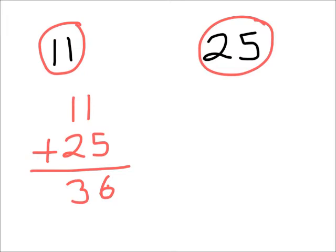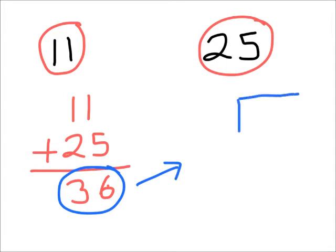Now to find the middle value — to find the number that's exactly halfway — I'm going to take the sum of the two numbers, the total when they're added together, and I'm going to half it. There are two different ways I could do this. To half a number we could literally divide it by two, because halving simply means dividing by two.